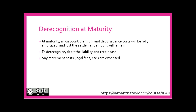The first is de-recognition at maturity. If the bond goes according to term, then at maturity, all the discount and bond premiums and debt issuance costs will be fully amortized and just the settlement amount will remain. To de-recognize, we debit that liability and we credit cash to pay back the investor.